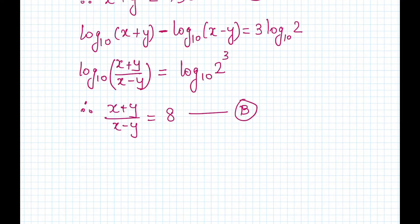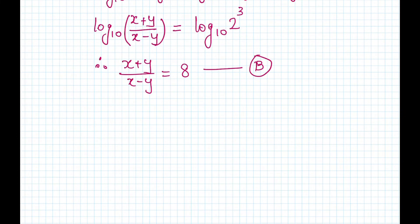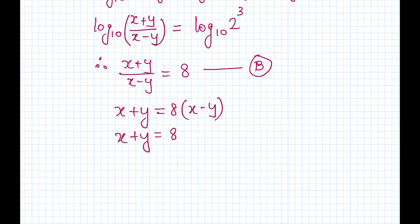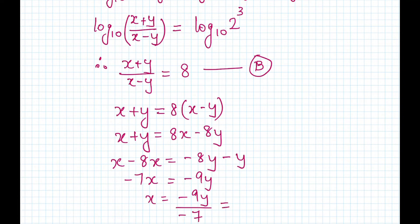Now that we have two equations, we can solve them simultaneously. From equation two: x + y = 8(x − y), so x + y = 8x − 8y. Rearranging: x − 8x = −y − 8y, giving −7x = −9y, so x = 9y/7.